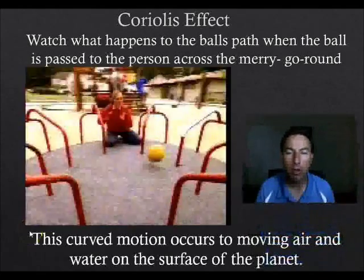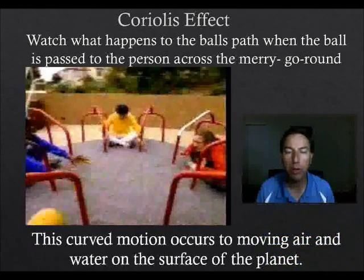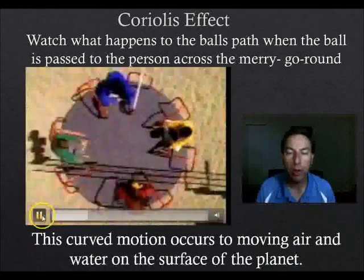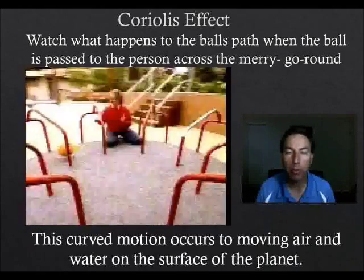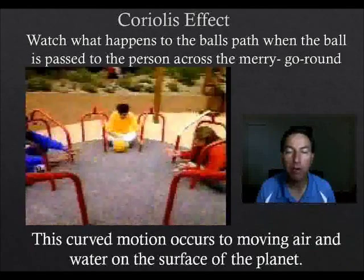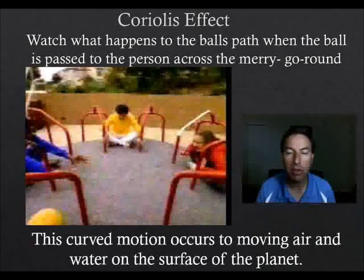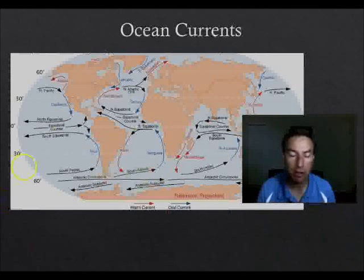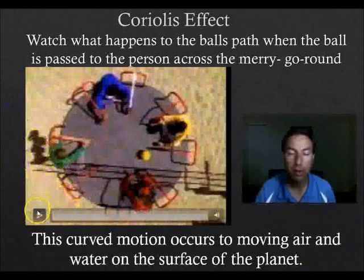The ball travels in a curved path in relation to the actual merry-go-round. If we look at this in relation to the surrounding land, the ball is actually traveling in a straight path — but you can see how it appears to curve because of the spinning motion of the merry-go-round.